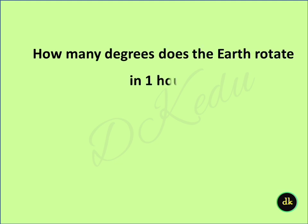How many degrees does the earth rotate in 1 hour? Answer: 360 by 24 is equal to 15 degrees.